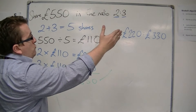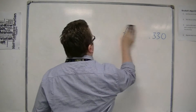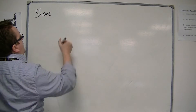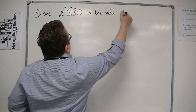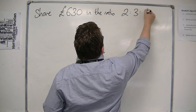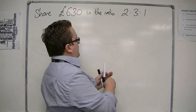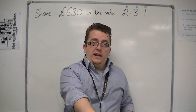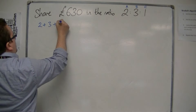That's how we can share a sum of money into a given ratio. Let's go through one more example. Share £630 in the ratio 2 to 3 to 1. This is looking at three distinct people — A, B and C. Person A is getting two portions, B is getting three portions, and C is getting one portion, so in total there are six portions: 2 plus 3 plus 1 equals 6.